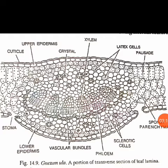Patches of stone cells can be found towards the lower side of the vascular bundles in the midrib. The vascular bundles are conjoined collateral and endarch, with xylem present towards the inner side and phloem towards the periphery, with the xylem facing the upper surface.